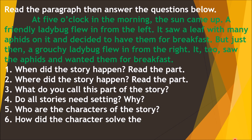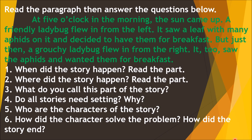For the sixth question: how did the characters solve the problem, and how did the story end? Their problem is their food for breakfast. Since they both saw the aphids on a leaf, the problem was solved. At the end of the story, they both saw their breakfast — and that's the end of the selection.